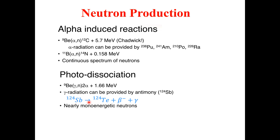The beta decay of antimony-124 is actually not for neutron production — it is for gamma production. What we do is first generate gamma radiations by the beta decay of antimony-124, and then utilize those gamma radiations for the production of neutrons from the beryllium nucleus. The gamma radiation produced during the beta decay of antimony is nearly monoenergetic, producing nearly monoenergetic neutrons.